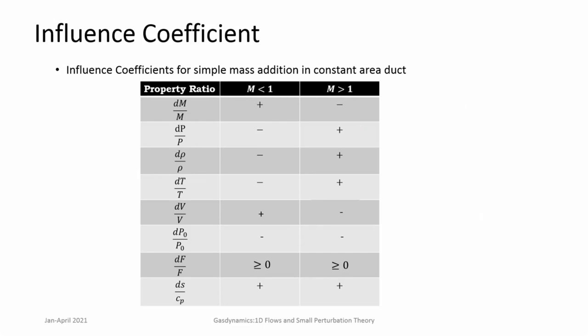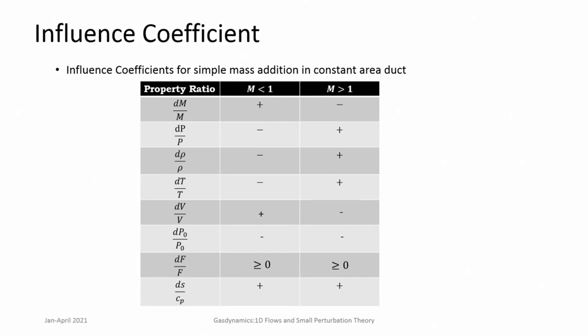That was a quick introduction — we had not considered mass addition before, but mass addition can be a possibility in specific applications. Just before we go to the generalized case of steady 1D flow where we consider all possible variations of the driving forces, this was a quick introduction to mass addition. The general analysis tools are similar to what we had done for the previous cases. Now let us look at the generalized steady 1D flow where you can have all kinds of effects happening.